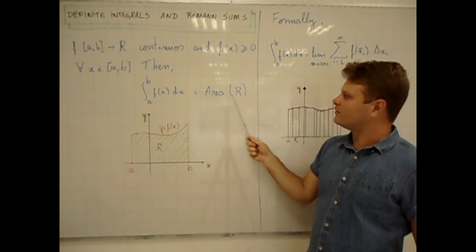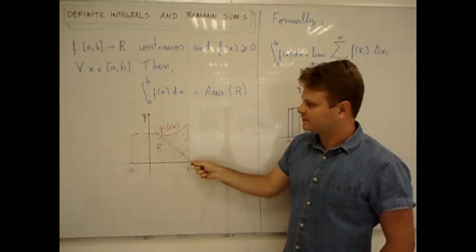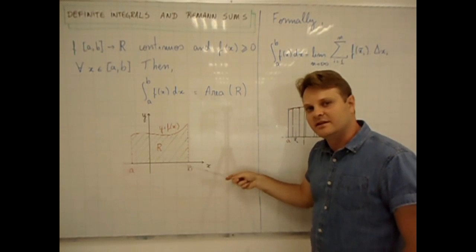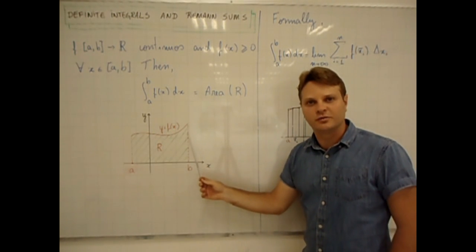and it gives us the area of a region capital R, where capital R is limited by the graph of f, the x-axis, and the vertical lines x equal to a and x equal to b.